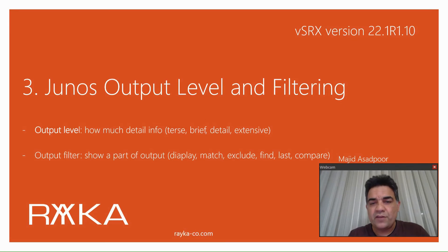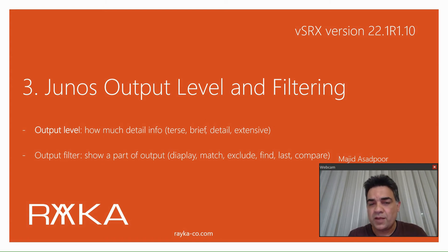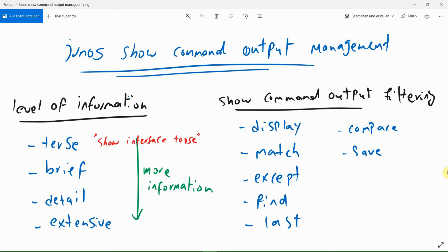Junos output level and filtering allow us to control and filter the output of Junos show commands. This allows you to control how much detailed information is displayed and only show the part of the output that is more important to us. You can control and filter the output as to how much detail and what part of the output is more important to display on the screen.